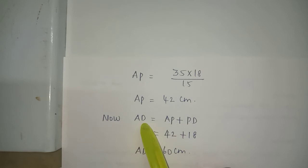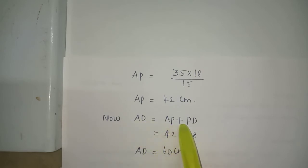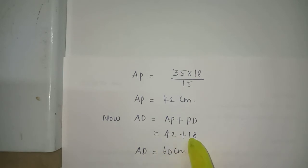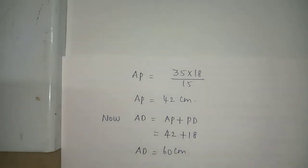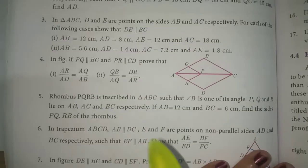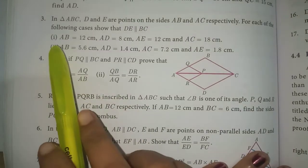But we have to find AD. AD is equal to AP plus PD, which is equal to 42 plus 18. Therefore the value of AD is equal to 60 cm.